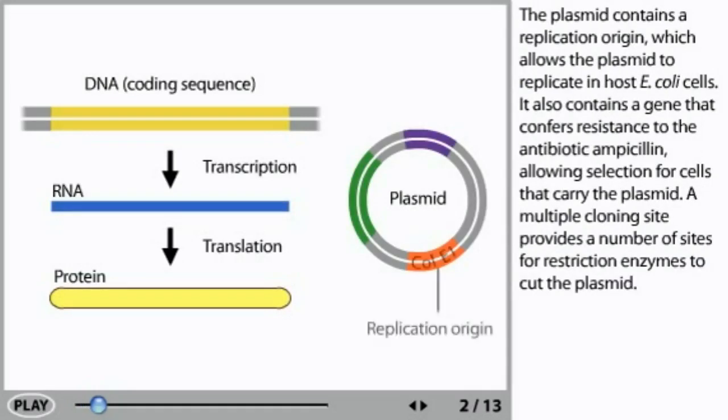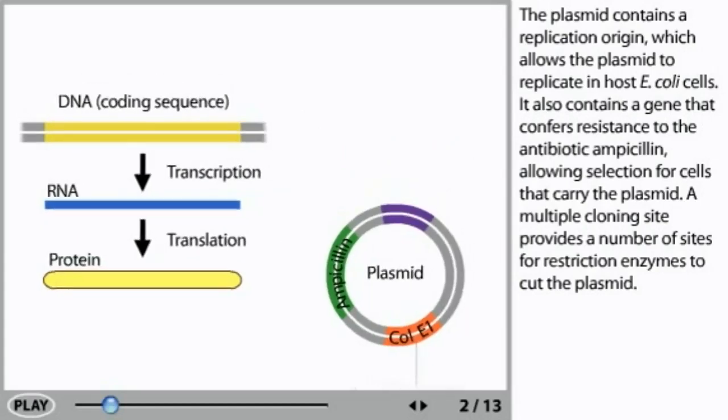The plasmid contains a replication origin which allows the plasmid to replicate in host E. coli cells. It also contains a gene that confers resistance to the antibiotic ampicillin, allowing selection for cells that carry the plasmid.